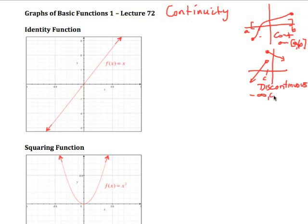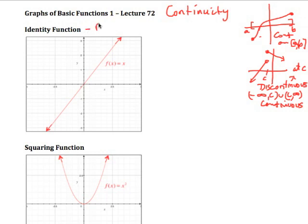We'd like to know the intervals of continuity where the function is continuous. So in this case it would be from negative infinity to c, and then from c to positive infinity, but it's not continuous at c itself. So the function is continuous on negative infinity to c and c to infinity, and discontinuous at c.